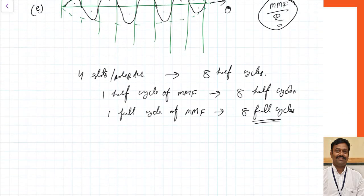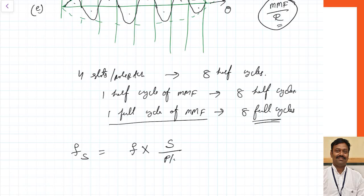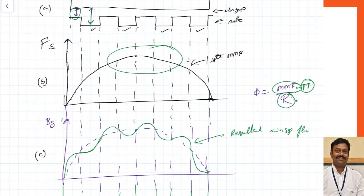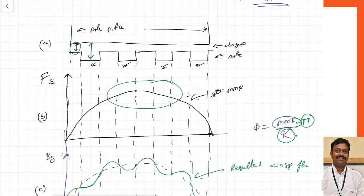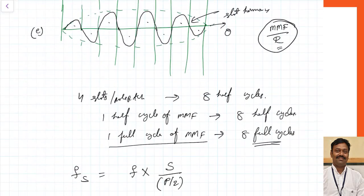To get 8 full cycles you have to go through 2 pole pitches, that is one pair of poles. The frequency of slot harmonics Fs equals the fundamental frequency times S divided by (p/2), where S is total slots and p is number of poles. With 4 slots per pole pitch, going through a pair of poles gives 2 times 4 equals 8, which is the number of slots per pair of poles.